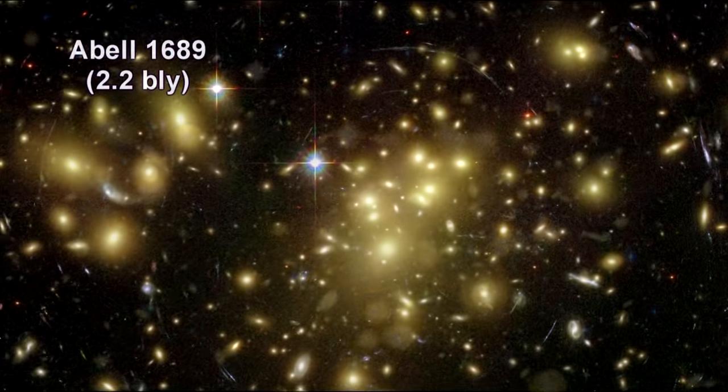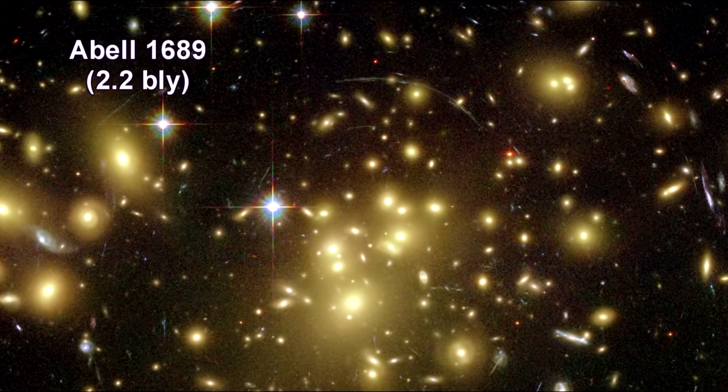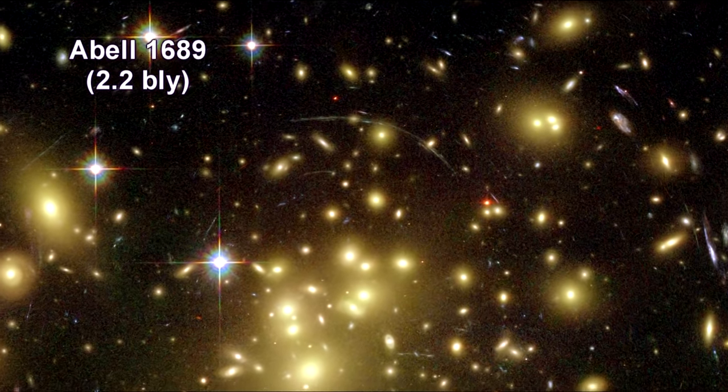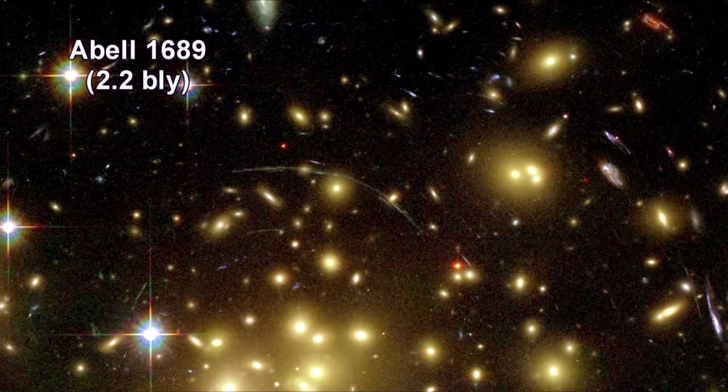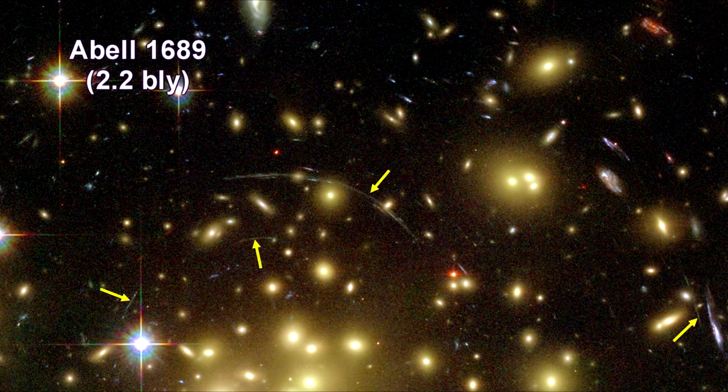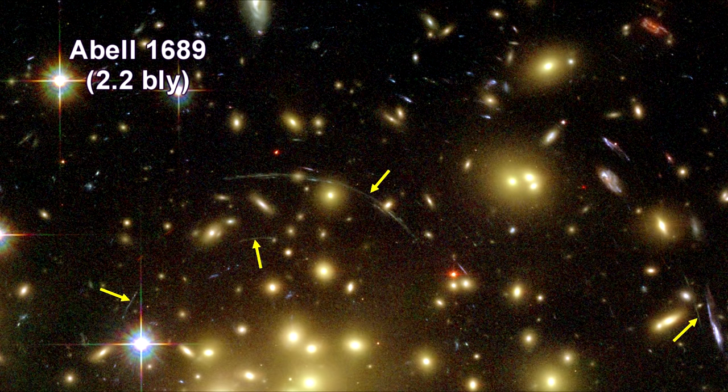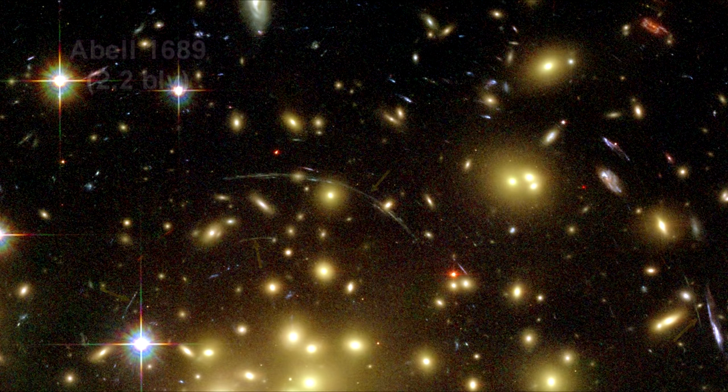This is Abell 1689, 2.2 billion light years away. It's one of the most massive galaxy clusters known. The gravity of its trillion stars plus dark matter acts like a 2 million light year wide lens in space.